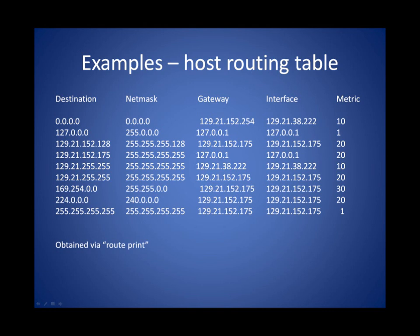Here's an example: the host routing table from a node sitting on the network. You can pull your own host routing table using the route print command on a Windows host and see similar output. Each one of the addresses we discussed earlier is represented here, along with the host address and a special address beginning with 169 — that's an IETF standard zero-config address used for ad hoc networking. We'll talk about the processing of this routing table in a later podcast.